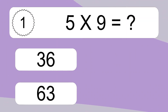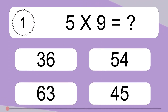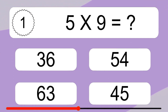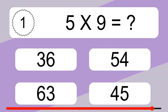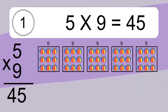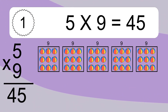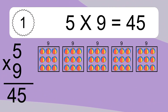5 times 9 equals what? 5 times 9 equals 45. We have 5 boxes, and each box has 9 colorful balls inside. If you count all the balls in all the boxes together, you will have 5 times 9 balls. This equals 45 balls.